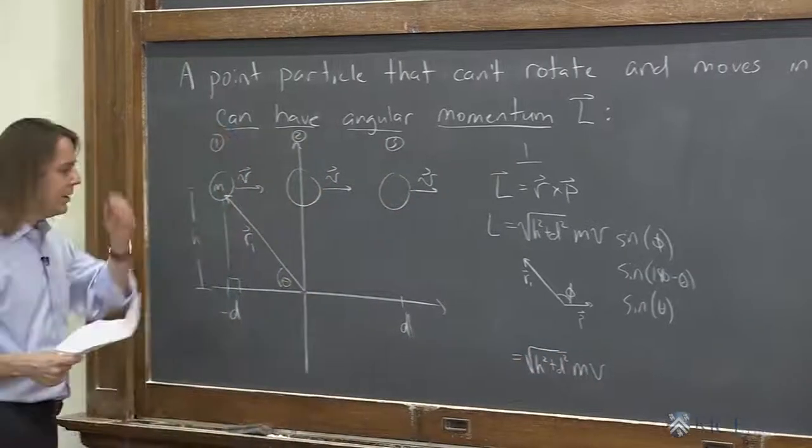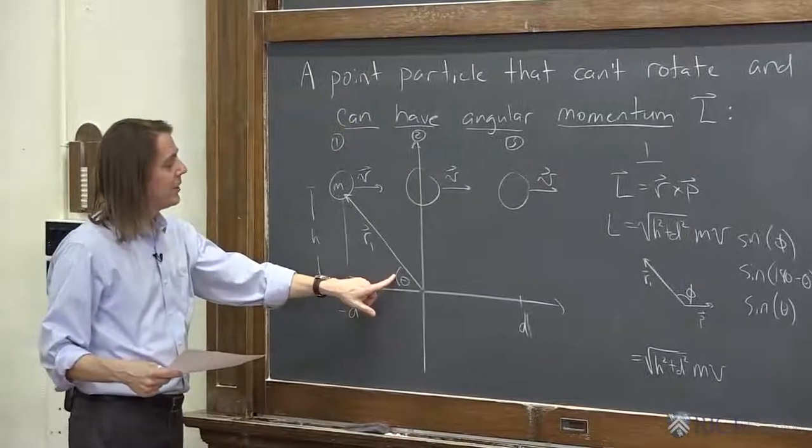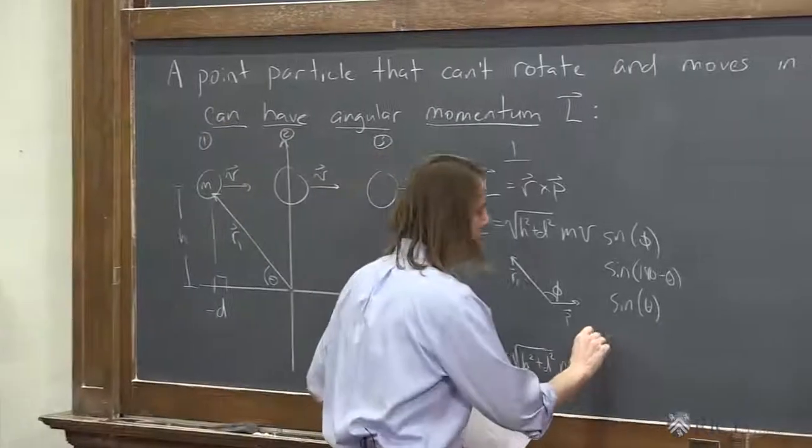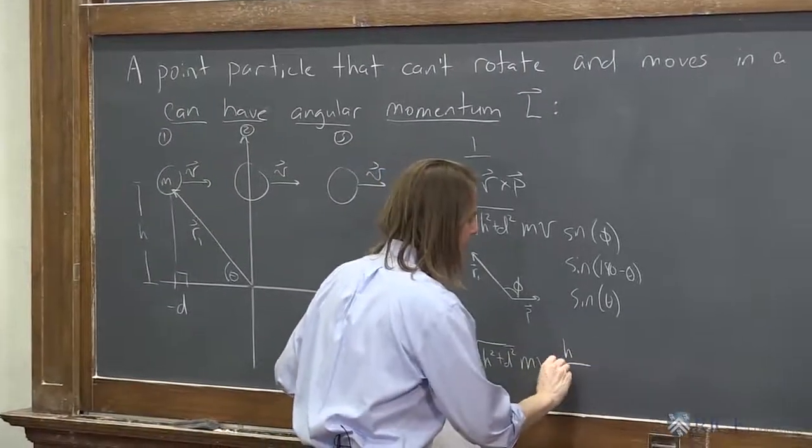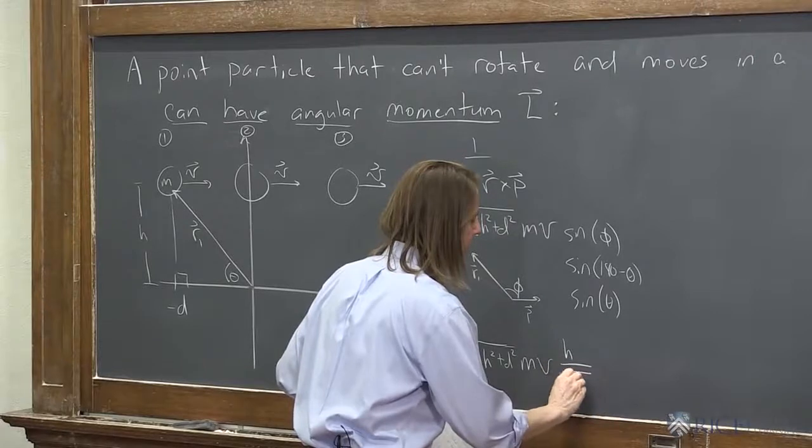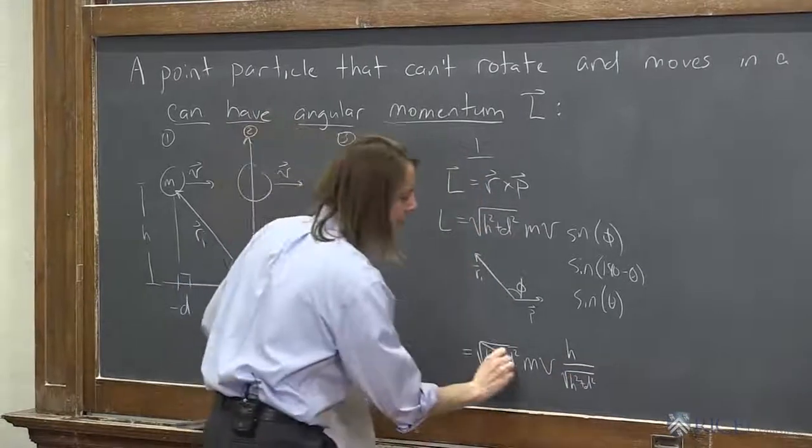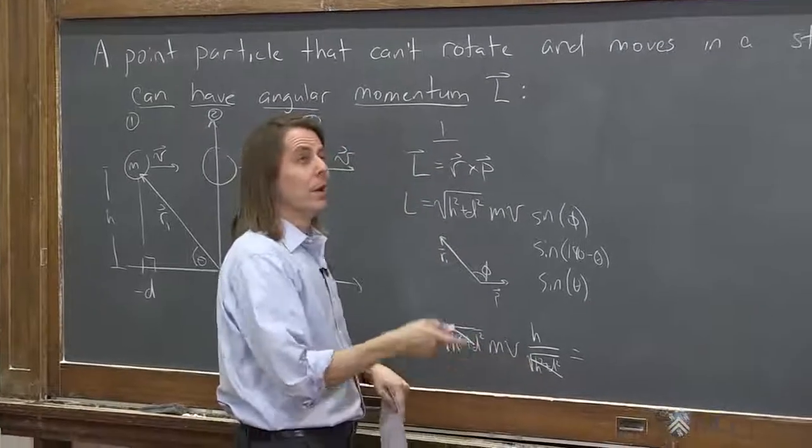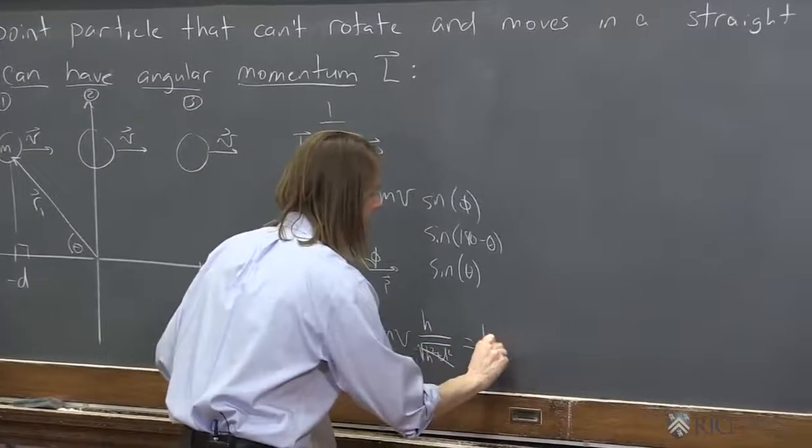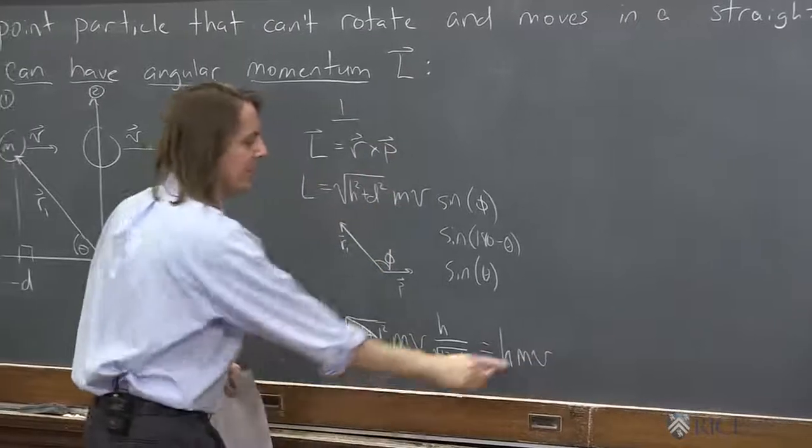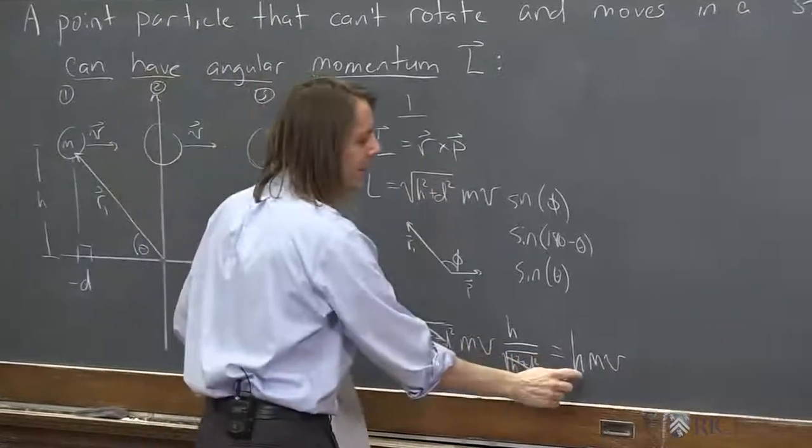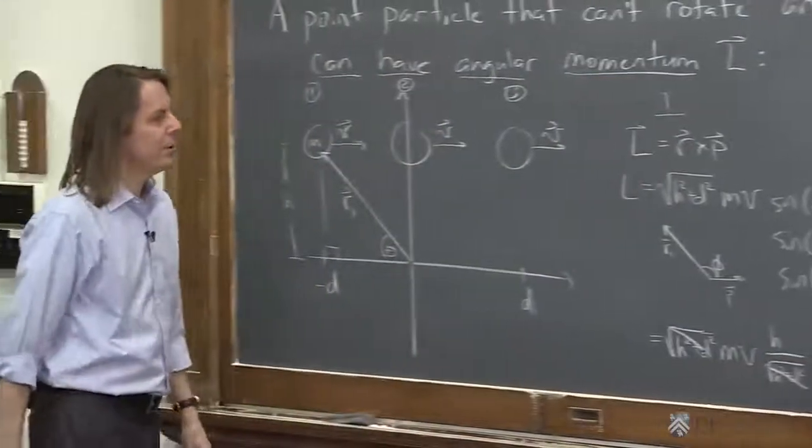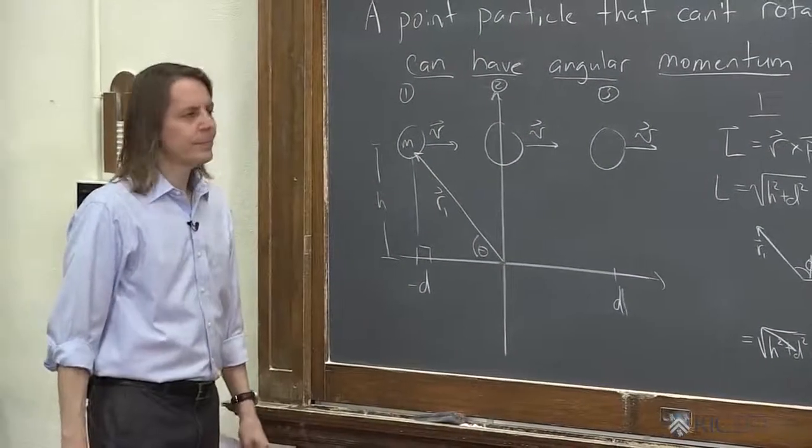So if we keep going then, we say this is the square root of h squared plus d squared. And now we need the sine of theta. And the reason I like to put it there is because then it's easy to get. It's opposite over hypotenuse. So we say h opposite over hypotenuse square root of h squared plus d squared. Thank God that's going to go away. So that goes away. And we get, I'm going to write it in the order hmv. The height times the mass times the velocity. Because that looks like rp. That's the distance you care about mv. So that's the answer. That is the angular momentum at position one.